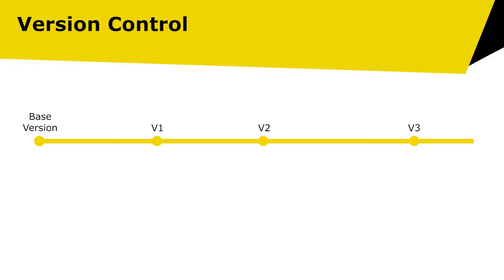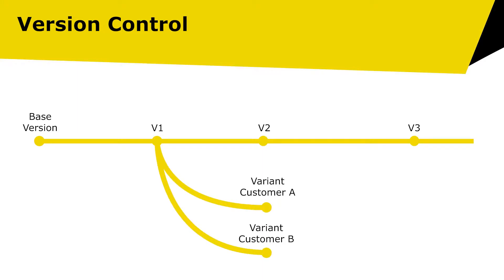For example, you can develop a base project, implement separate features for customer A and customer B, and you can always merge these features into the base project.